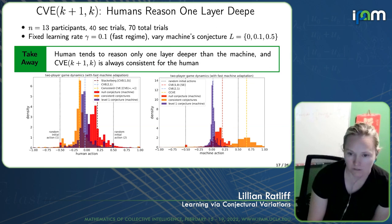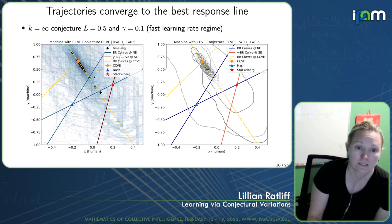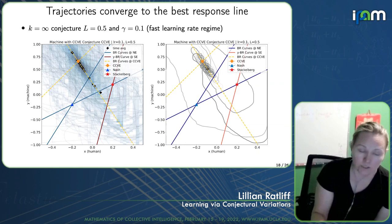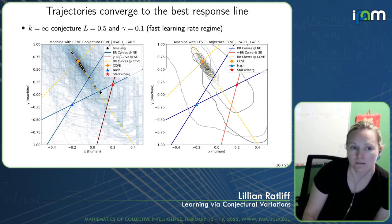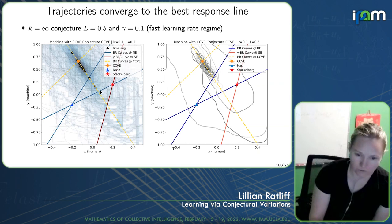You can also look at the trajectories — the gray lines are different trajectories of humans moving their cursor. For the k equals infinity conjecture level for the machine, the time averages of these trajectories concentrate along the best response curve for the human corresponding to the CCVE — the consistent conjectural variations equilibrium — consistent with that level of conjecture.